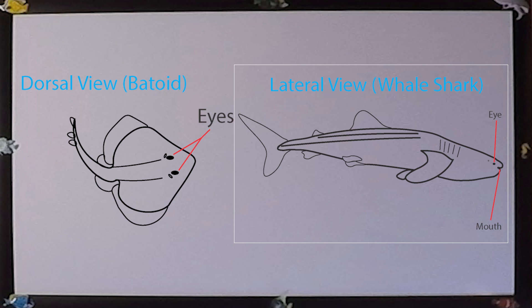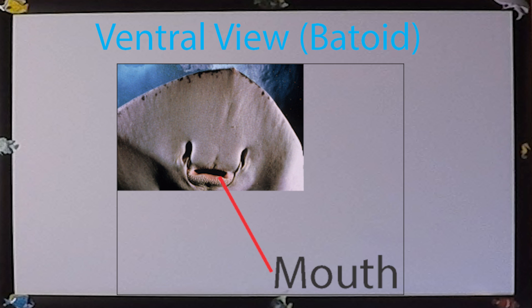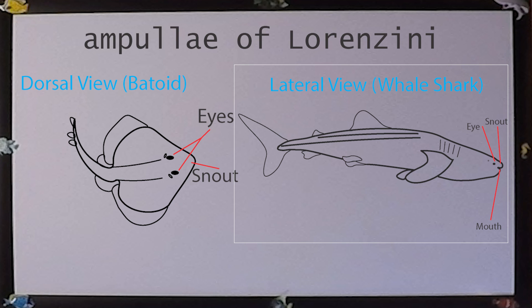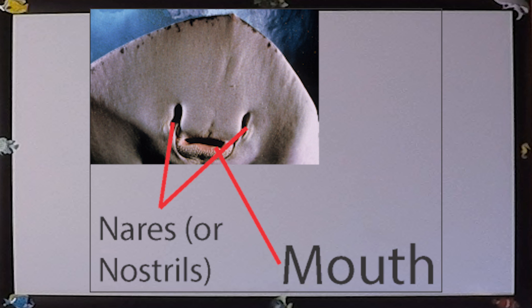The eye and mouth are easily distinguished. In skates, rays, sawsharks, and sawfishes, the mouth is ventral, facing the benthic or bottom. The snout is considered the region anterior to the eye. Within most sharks, the ampullae de Lorenzini — their electroreception sensors — are housed here. The nares, or nostrils, like our noses, aid in chemosensory, or smelling.